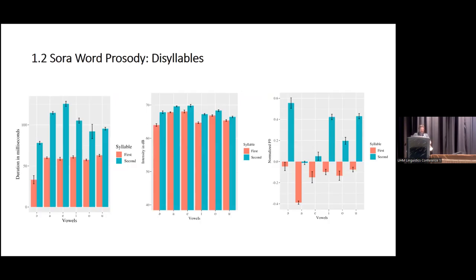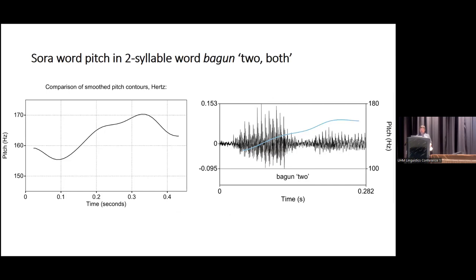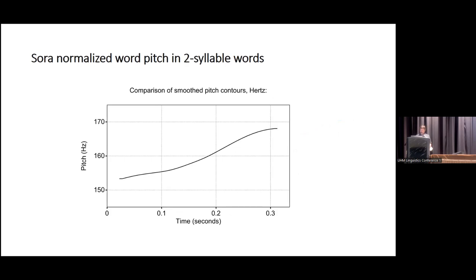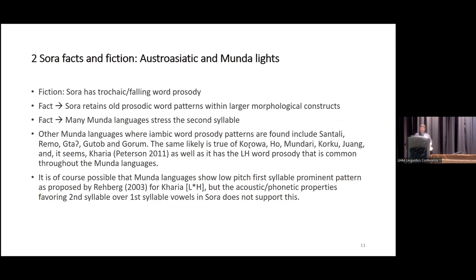Looking at some of the data on Sora disyllables, we have three acoustic cues conspiring to indicate prominence: duration, intensity, and fundamental frequency or pitch. As we can see from these three graphs, the second syllable is always more prominent in all three cues than the first syllable in disyllables in Sora. Pitch contours in a disyllable word show a rise — a smooth pitch contour. So Sora does not have trochaic or falling word prosody; it has rising or iambic structure still, retaining old prosodic word patterns. It is basically a second-syllable stress system.